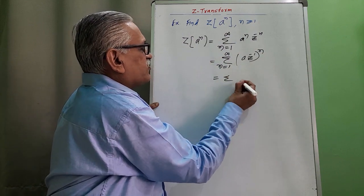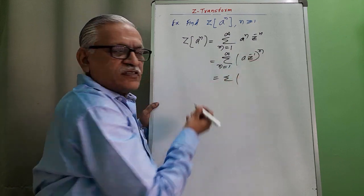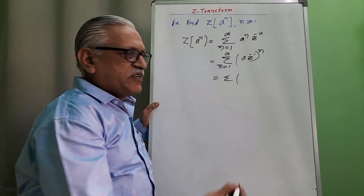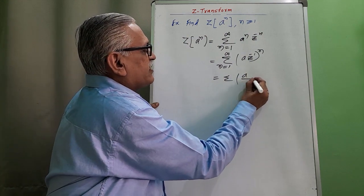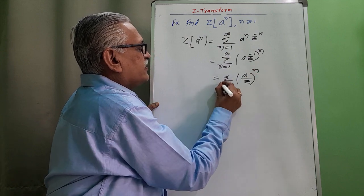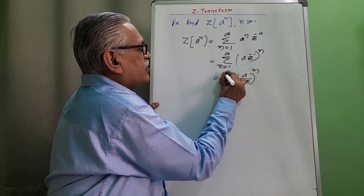Then rewriting it, summation of transferring this Z raised to minus 1 to denominator, we get A by Z whole raised to N, N changes from 1 to infinity.